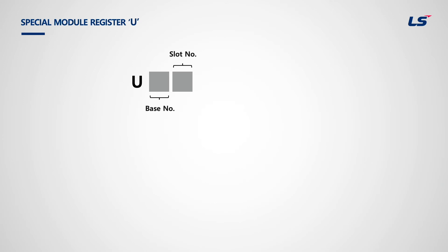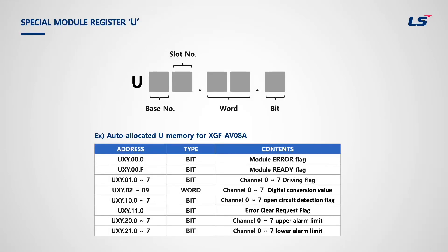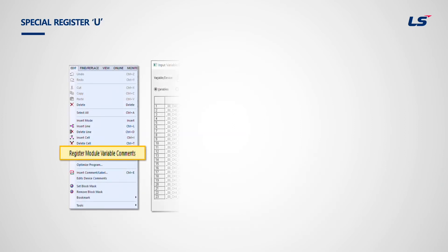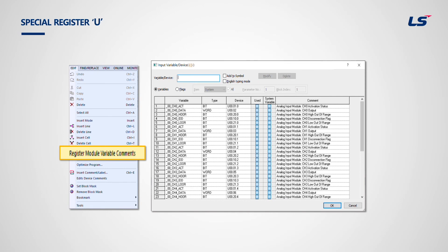U-device is a special module register. It is used to read data from special modules installed in a slot, such as analog, high-speed counter, temperature control, and positioning modules. The device address is not fixed but allocated depending on what kind of special module is used and which slot it is equipped in. The address will be registered automatically if users register module variable comments in the edit menu.